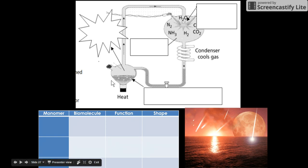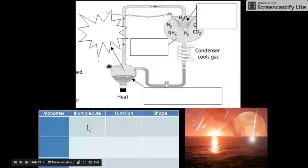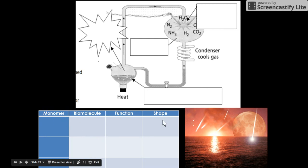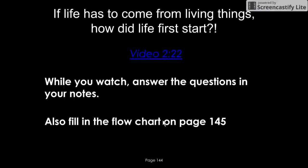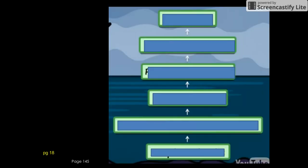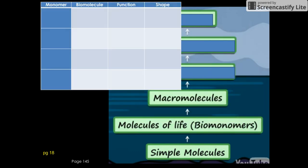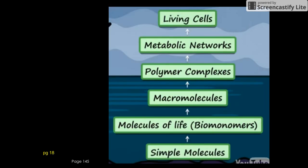...were similar to real life. For example, this represented the ocean. On page 145, we filled in this table about the macromolecules or biomolecules. Protein is one example - you wrote in the monomer, the function, and the shape of all of them. After this, you filled in the diagram showing how we went from simple molecules all the way up to the living cells we have today. If you need to write this in, you can access the PowerPoint in the Google folder.